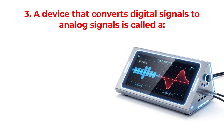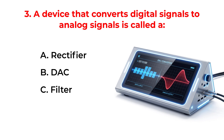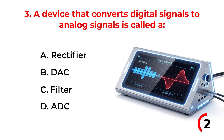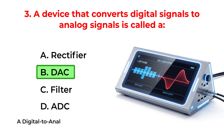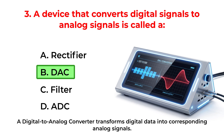A device that converts digital signals to analog signals is called a: A. Rectifier. B. DAC. C. Filter. D. ADC. The correct answer is Option B: DAC — Digital to Analog Converter. A digital to analog converter transforms digital data into corresponding analog signals.